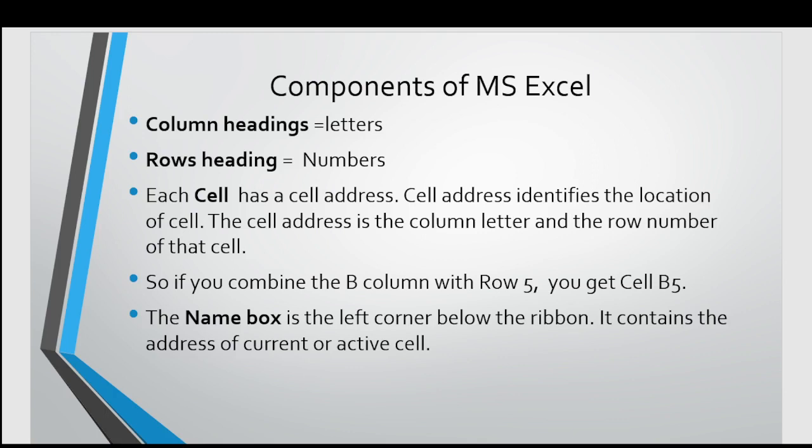So, if you combine the B column with row 5, then you get cell B5. The name box is the left corner below the ribbon, and it contains the address of current or active cell.